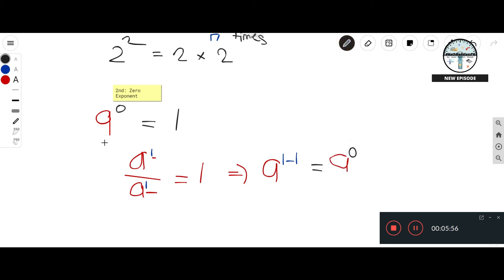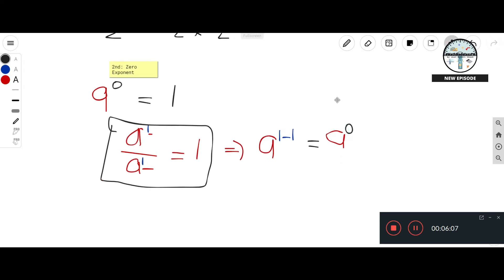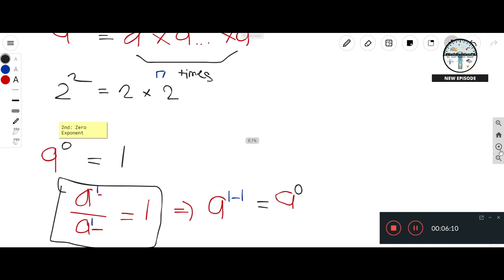So you get it why a raised to zero is equal to one right? Because if you refer to this, that's the reference. That's where the zero exponent property comes from. It's simple like that guys.